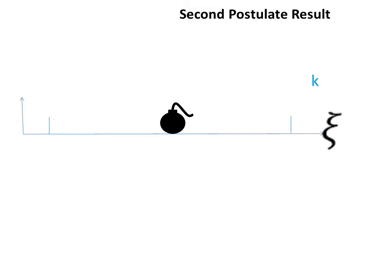The bomb is at rest with the system. The sources of light are always at rest with the system because of the second postulate. Therefore, considering velocity of light equals constant, flashes from equidistant sources will reach the bomb always for the same time, independent of whether or not the system is moving.